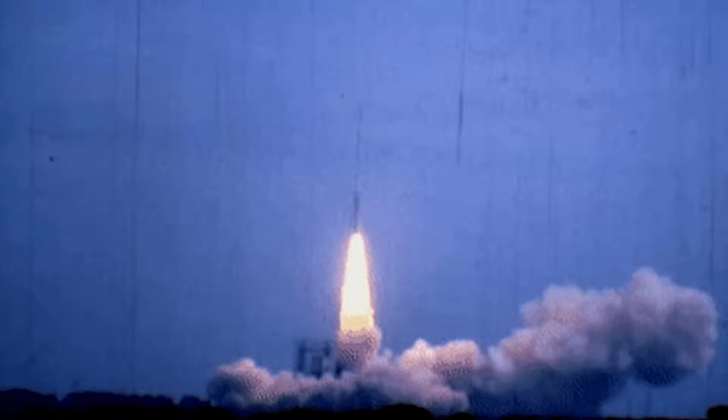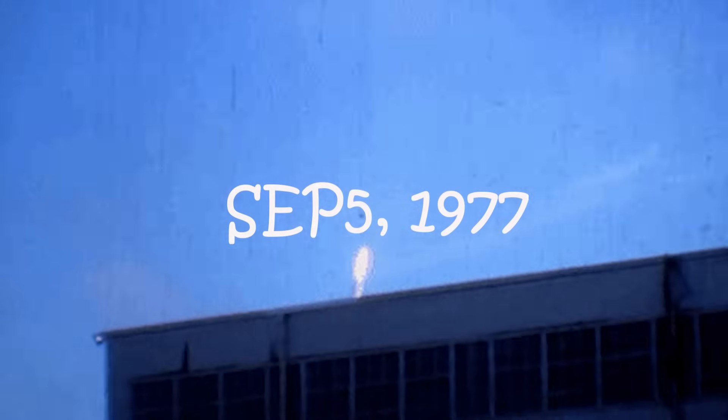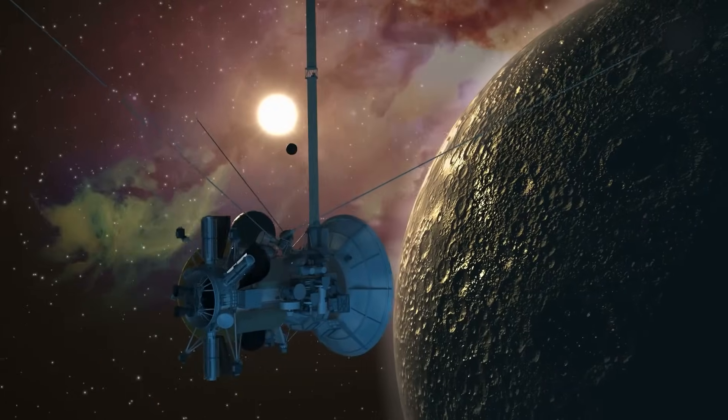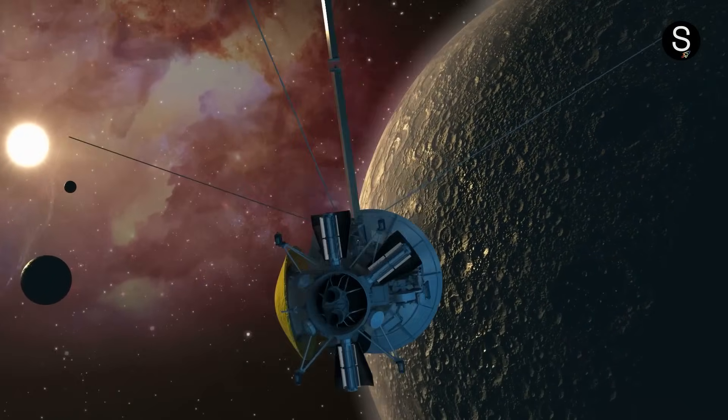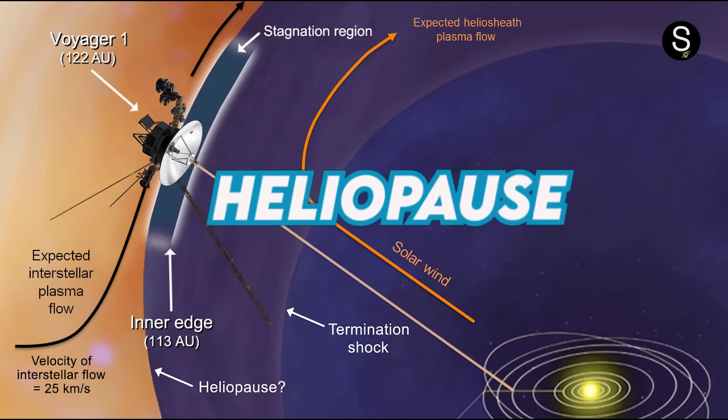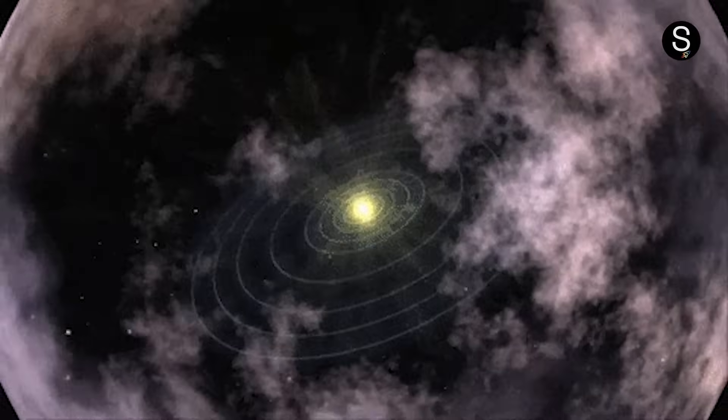Voyager 1 was launched on September 5, 1977, and has been in space for nearly 44 years. In 1990, it reached the heliopause, the outermost point of our solar system.